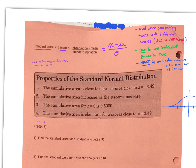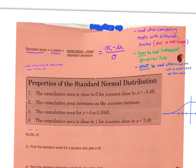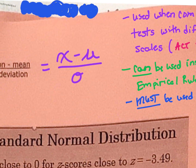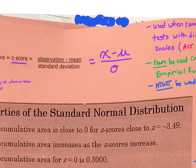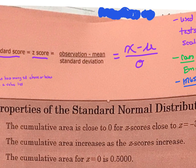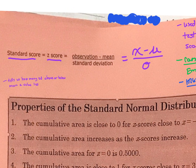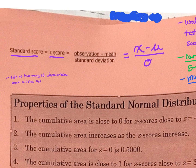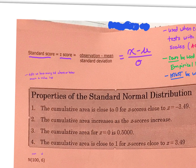Let's talk standard scores, also known as z-scores. I will use those terms interchangeably, so please realize I'm referring to the same thing when I say standard score or z-score. Some people get confused by the notation seen in most textbooks. X represents some observation, mu is our mean, and sigma is our standard deviation. The formula for finding a standard score or z-score is: observation minus mean, all over the standard deviation.